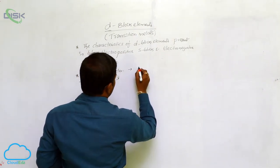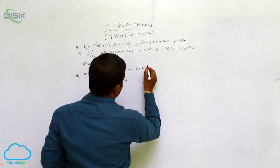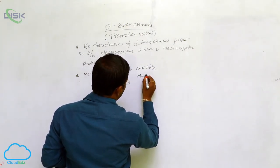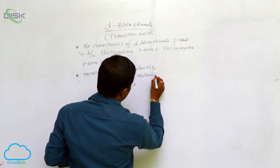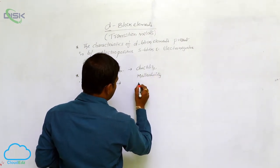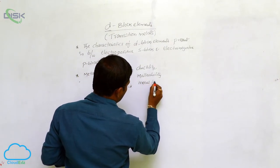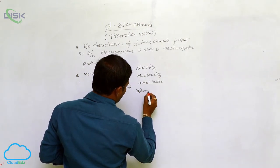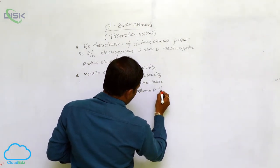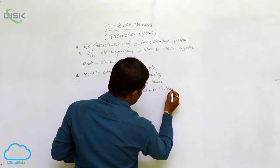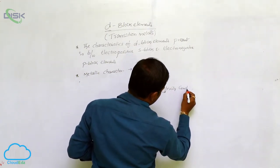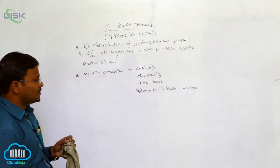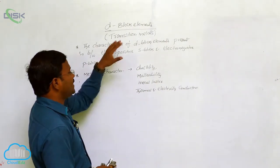The metallic characters include ductility and malleability. They also exhibit metallic lustre and are used as thermal and electrical conductors. All these are metallic characters exhibited by D-block elements.